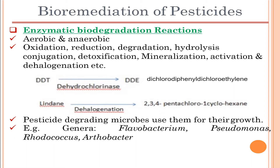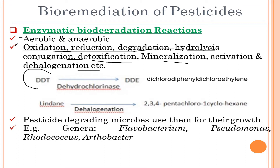Moving on to enzymatic biodegradation reactions, these can be of two general types: aerobic and anaerobic. The processes include oxidation, reduction, degradation, hydrolysis, conjugation, detoxification, mineralization, activation, and dehydrogenation. There are many processes involved in the biodegradation of pesticides, covering all the major chemical transformations these compounds undergo.